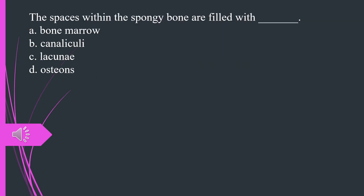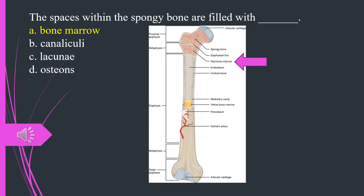The spaces within the spongy bone are filled with what? A. Bone marrow. B. Canaliculi. C. Lacunae. D. Osteons. The answer is A. Bone marrow.